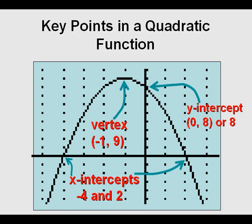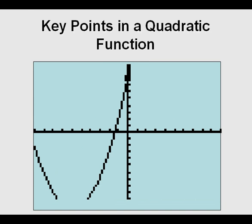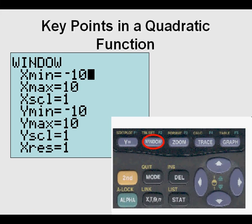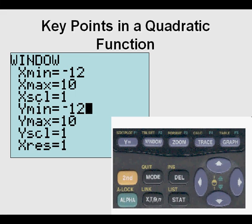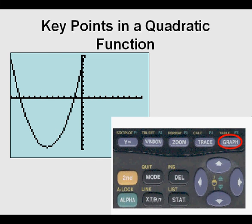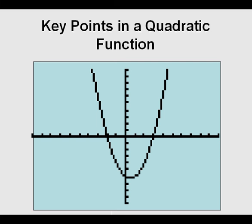In this case, our y-intercept has a value of 8, our vertex has coordinates of negative 1 comma 9, and the x-intercepts are negative 4 and 2. If the key points aren't visible in your graphing calculator, the view screen can be adjusted. We go to the window view and make both the x-minimum and y-minimum smaller — in this case, negative 12 — so we can see both x-intercepts, the vertex, and the y-intercept.